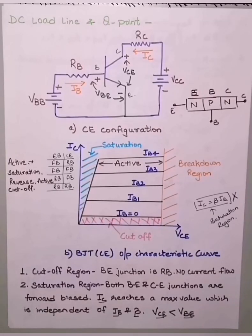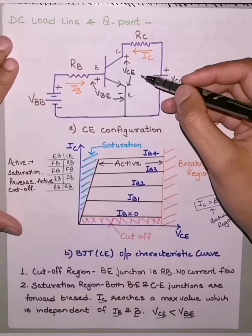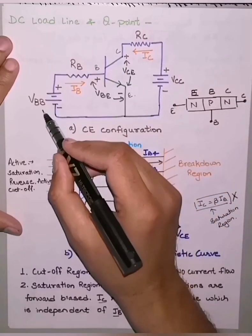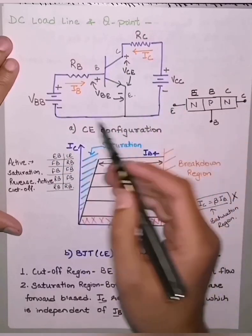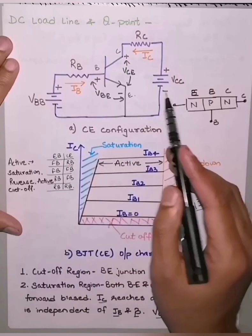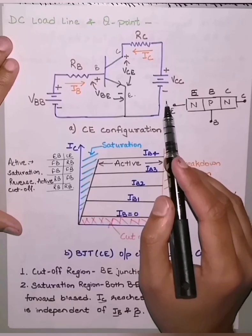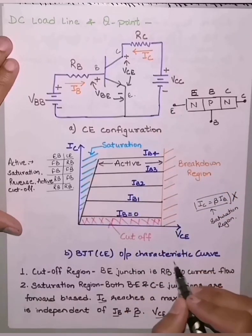Today I will discuss DC load line and Q point of a bipolar junction transistor. We have already discussed different transistor configurations — common emitter, common base, and common collector — and their input and output characteristics. To discuss the DC load line, I have taken an example of the common emitter configuration, using two biasing voltages VBB and VCC. Depending upon the polarities and magnitudes of these two voltages, we can have different regions of operation when we look at the output characteristics curve.